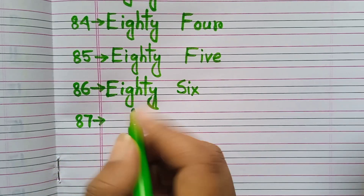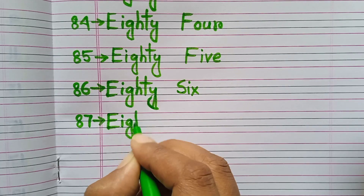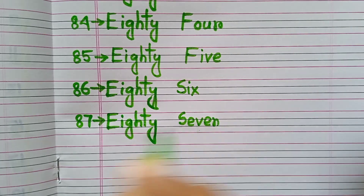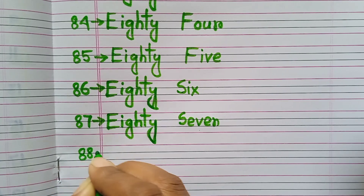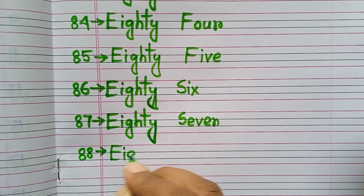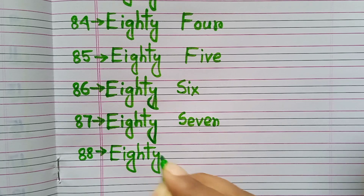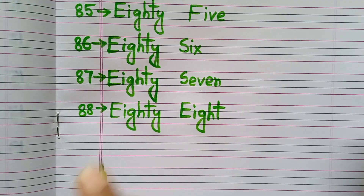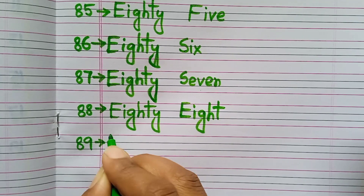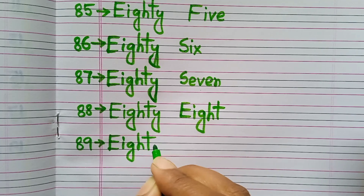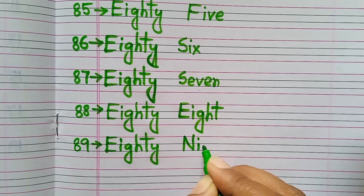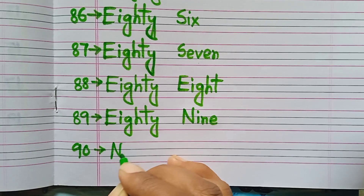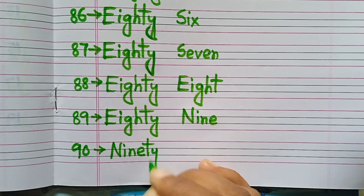Eighty-seven. E-I-G-H-T-Y S-E-V-E-N. Eighty-seven. Eighty-eight. E-I-G-H-T-Y E-I-G-H-T. Eighty-eight. Eighty-nine. E-I-G-H-T-Y N-I-N-E. Eighty-nine. Ninety. N-I-N-E-T-Y. Ninety.